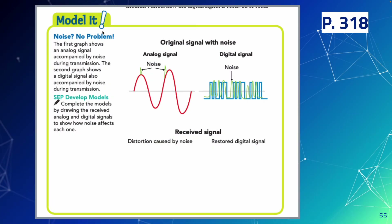On page 318, the first graph shows an analog signal accompanied by noise during transmission, and the second graph shows a digital signal also accompanied by noise. You need to draw two things at the bottom: the distortion caused by noise for the analog signal, and the restored digital signal — draw it as one continuous line without the green (noise) portion, only the blue signal.